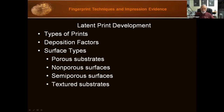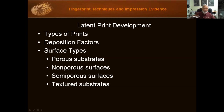Another surface issue is textured substrates. They can be either porous or non-porous, but they present a problem of incomplete contact between the friction-ridged skin and the surface being touched. Examples include the pebbled plastic bezel around a computer monitor, the textured vinyl cover on a refrigerator, or the texture on the dash of a car. You can detect fingerprints, but they're often partially obscured because the finger only touched the raised areas — everything in between those raised areas is missing.